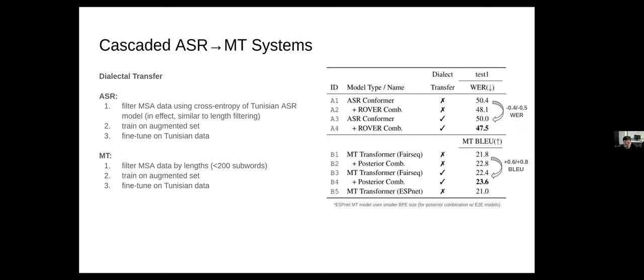Let's look at how we do some dialectal transfer, or in other words, using modern standard Arabic to boost our Tunisian Arabic performance. Similarly for ASR and MT, we start with a filtering step and then train on an augmented set of combined MSA and Tunisian Arabic data, and then fine-tune on just the Tunisian Arabic data. For ASR, we filtered the large set of modern standard Arabic data using cross entropy of a Tunisian ASR model. But we found in effect that this is very similar to filtering by length. For MT, we simply filtered the modern standard Arabic by some length, which we chose as 200 sub-words as a maximum. You can see in the results on the right, we got modest gains for both ASR and for MT from including the MSA data through these techniques.